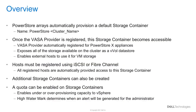Now let's review storage containers. PowerStore automatically provisions a default storage container across all cluster capacity. When the VASA provider is registered, the storage container becomes accessible and can be added as a vVol datastore. For PowerStoreX, the VASA provider is automatically registered and the vVol datastore is mounted as part of initial configuration. Hosts need to be registered using iSCSI or Fibre Channel, after which they automatically have access to the storage container. Administrators can also create additional storage containers with the option to set a quota to limit usage.